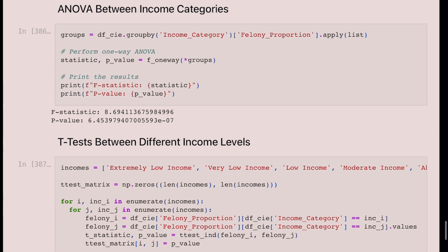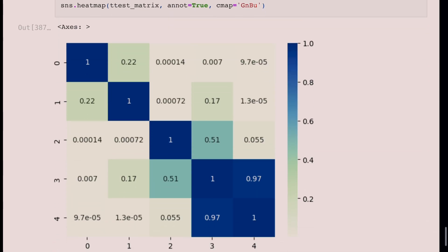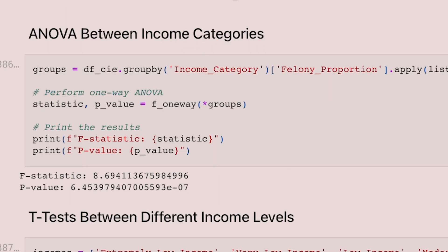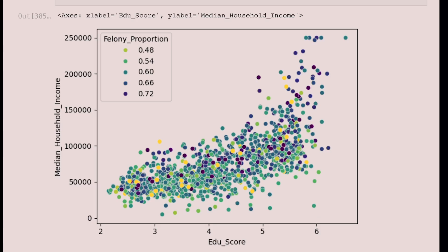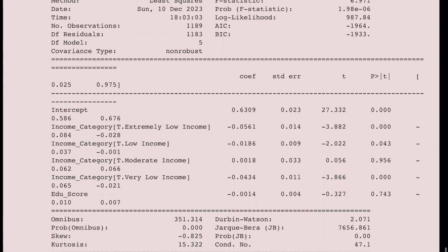We also conducted two statistical tests: an ANOVA between income categories and a t-test between the different income levels. Based on our ANOVA test, we received a p-value of 6.45 times 10 to the negative 7th, which is lower than our alpha value of 0.05, leading to the rejection of our null hypothesis. Looking at the heat map showing the t-test between different income levels, a higher p-value corresponds to more similar distributions, while lower values correspond to less similar distributions.